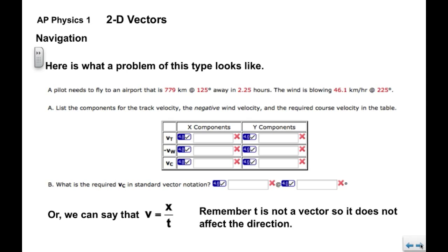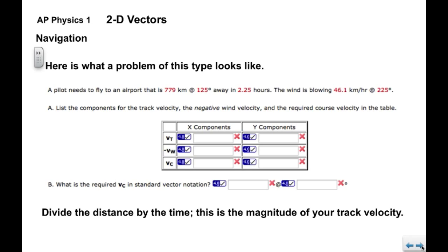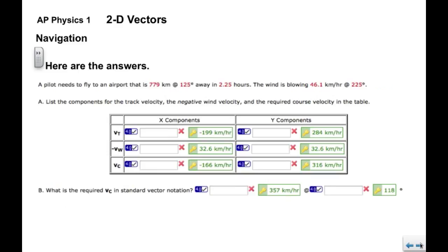So now t of course is not a vector, so it doesn't affect the direction of the position. If we need to go this far in this amount of time, we can divide them. Divide the distance by the time and this will give you the magnitude of your track velocity. From that point, you have a track velocity at 125. You have a wind velocity at 225. You already know how to find the components of each one of those. Remember to switch the angle of the wind vector because we're adding the negative wind vector here.